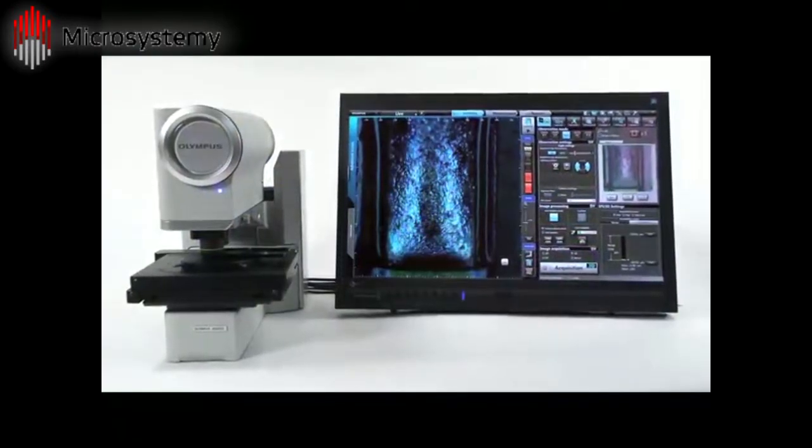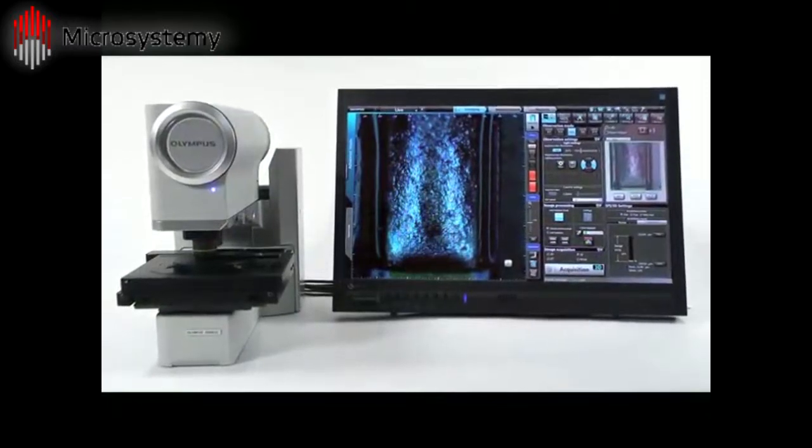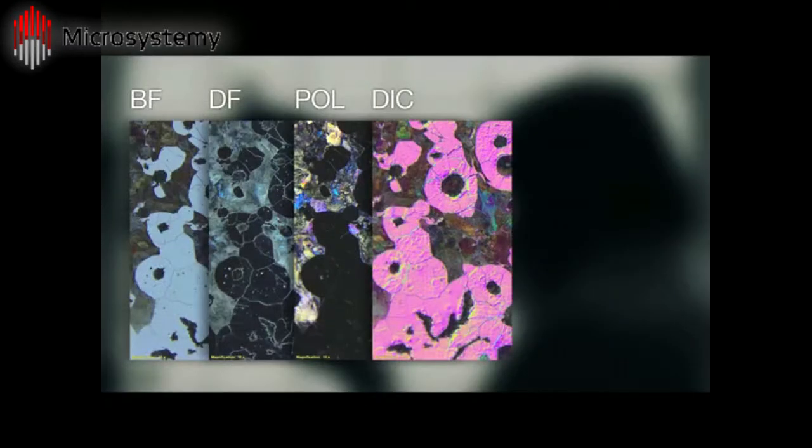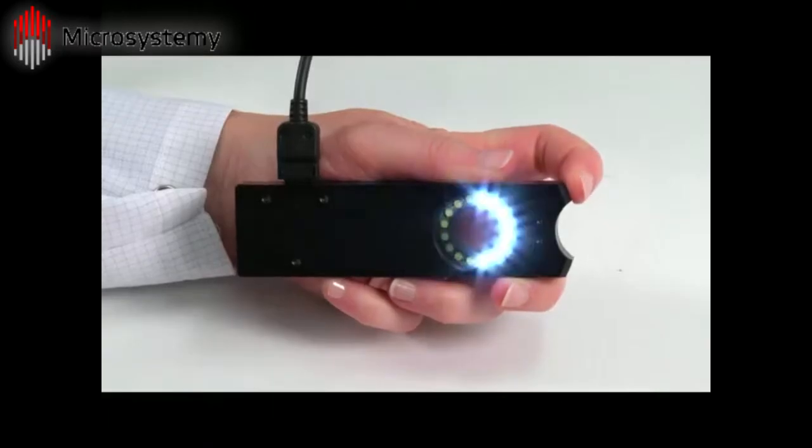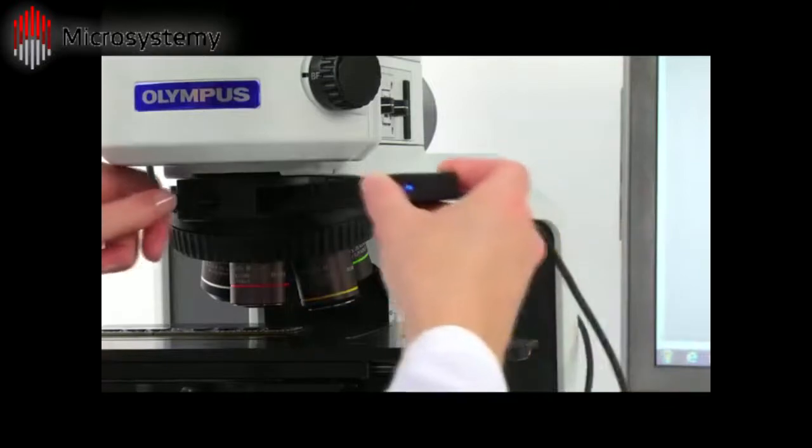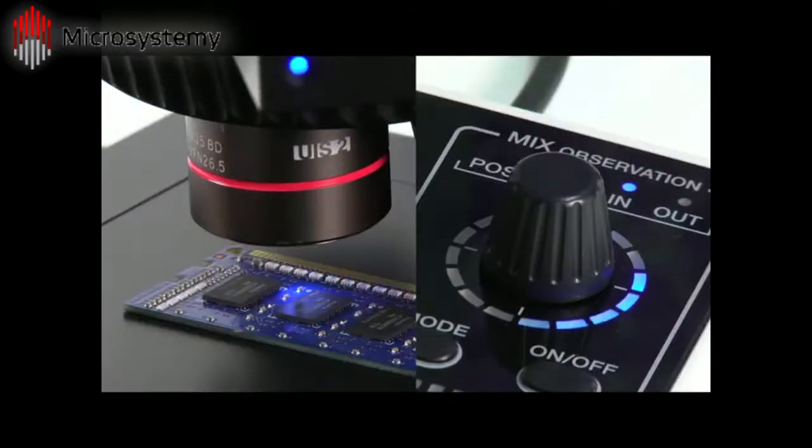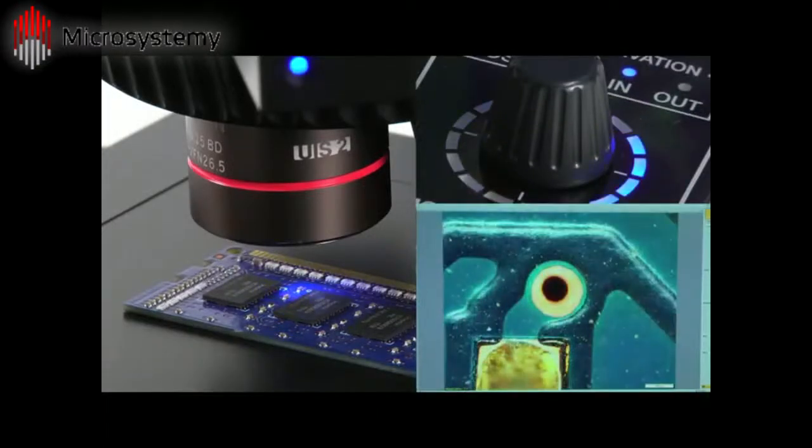Based on technology from our DSX digital microscopes, the BX3M also offers Olympus directional dark field and mix illumination. The 16 LEDs in the mix slider shine directional dark field on the sample, similar to traditional dark field but with more flexibility.